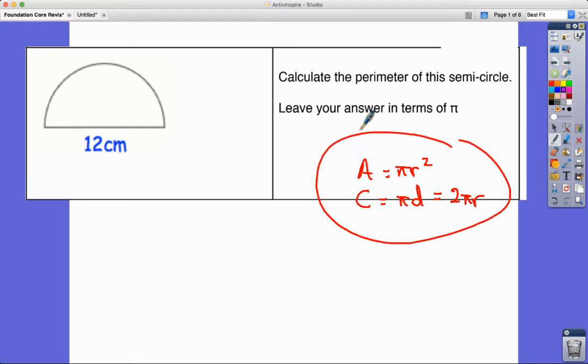As soon as we see a circle problem we should have those at the ready. Calculate the perimeter of this semicircle. The perimeter is the outside length, so we're going to have to find this curved arc length here and also add to it this diameter. We already know the diameter, it's 12 centimeters, so the perimeter is going to be 12 centimeters plus half of the circumference.